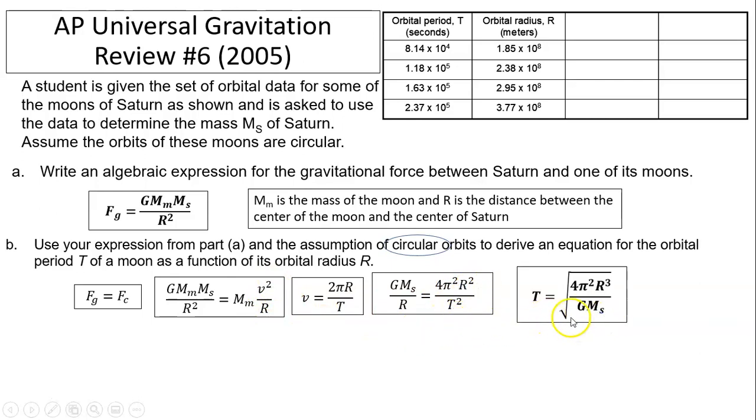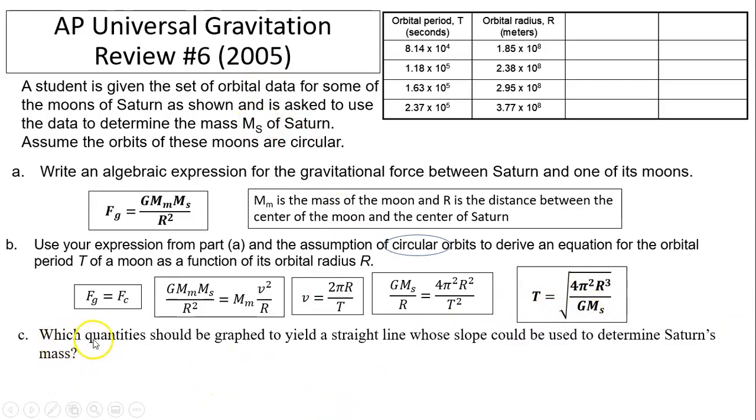From here, you can solve for t: square root of 4π²r³ divided by GMs. If you are having trouble with this, solve for t² first. Then you do the square root on both sides.